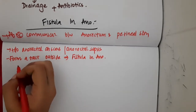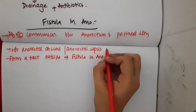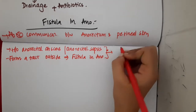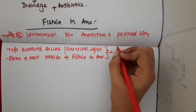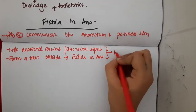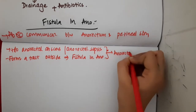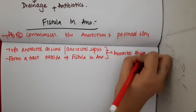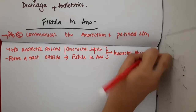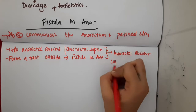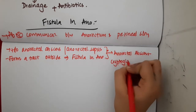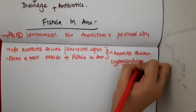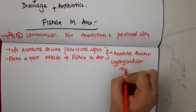This theory, where the anorectal abscess forms the fistula in Ano, is called the anorectal abscess and cryptoglandular theory.